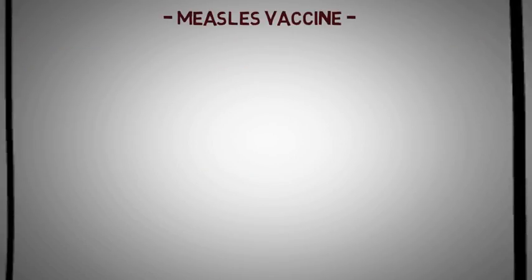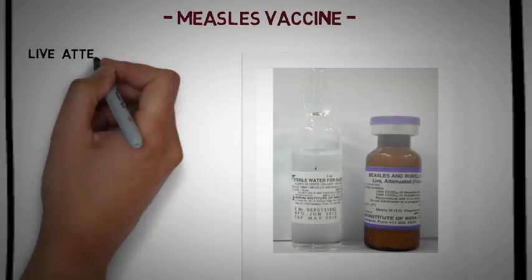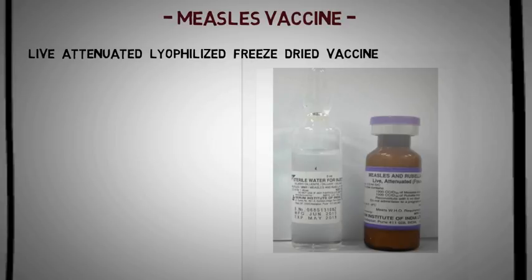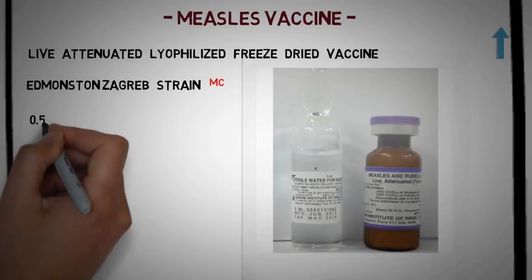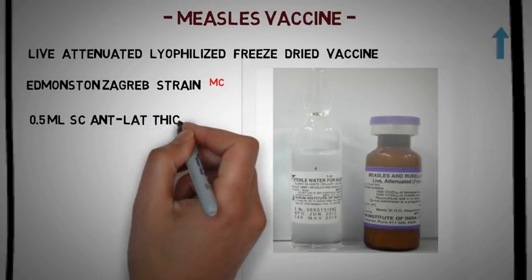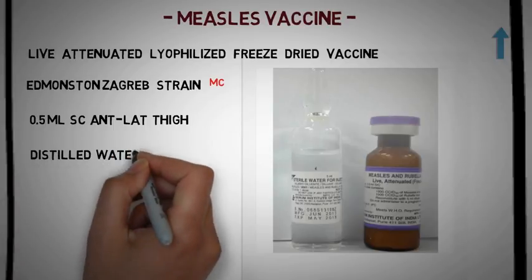The measles vaccine is a live attenuated, freeze-dried, lyophilized vaccine. It is most commonly derived from the Edmondson Zagreb strain. The dose is 0.5 ml given subcutaneously in the anterolateral aspect of the thigh. The diluent used is distilled water and not normal saline.